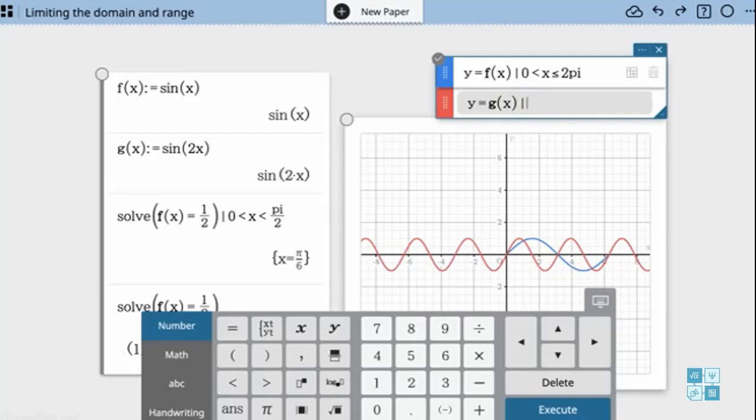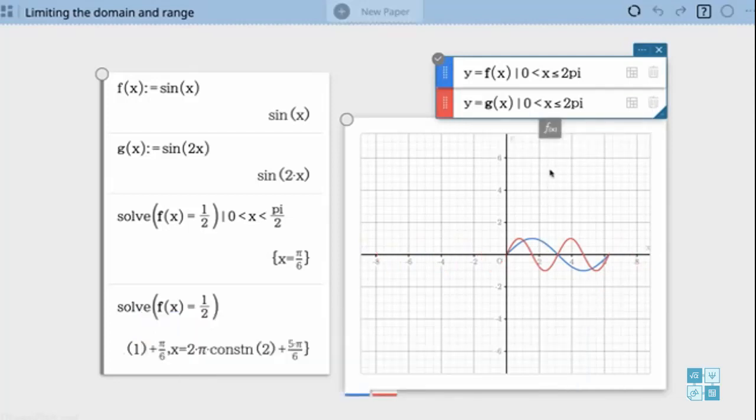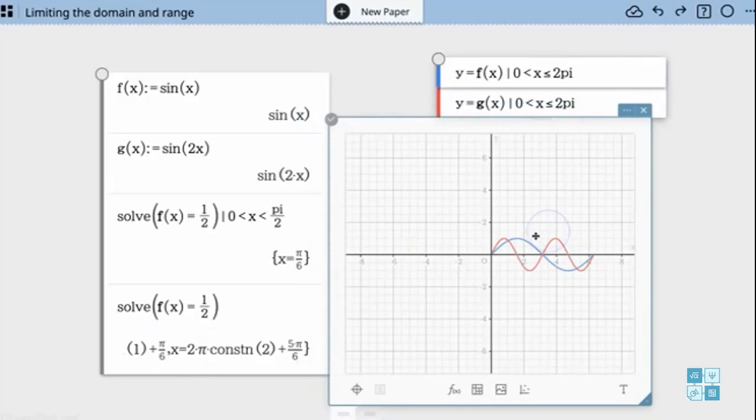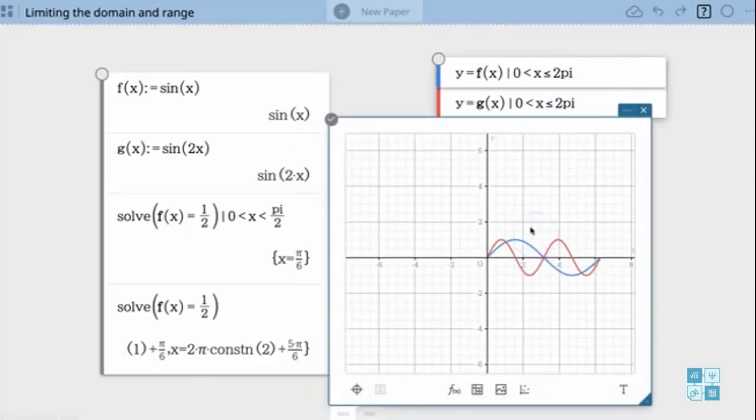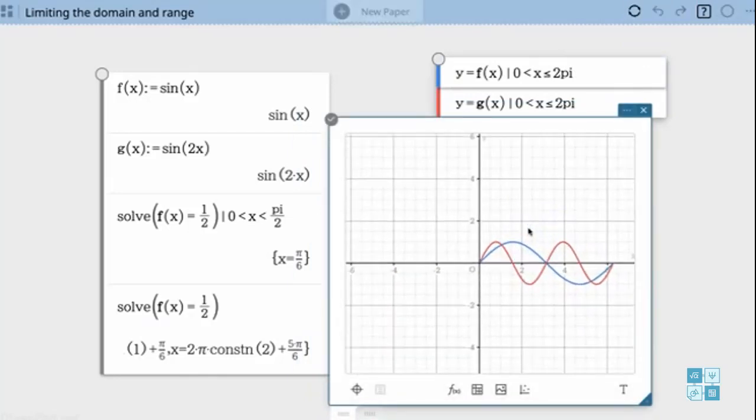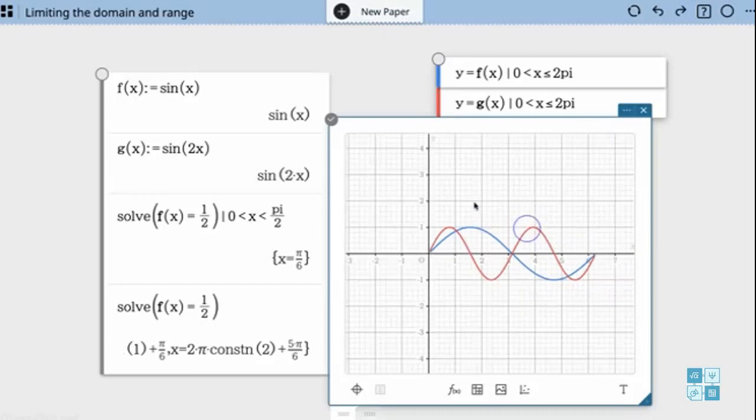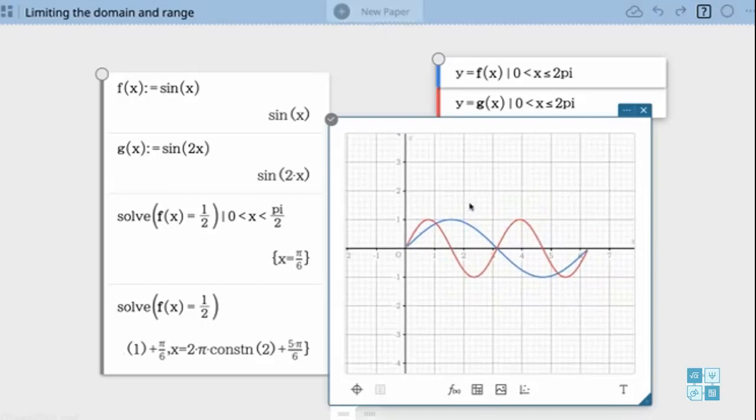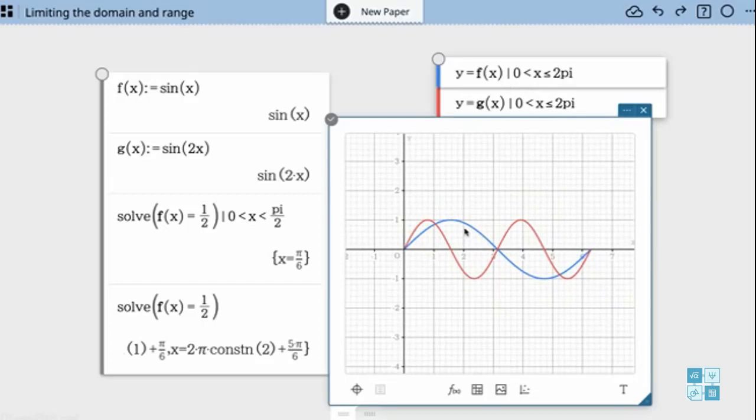So let's do the same thing for the g of x which is sine of 2x. So we're going to limit it between 0 which is less than x which is less than or equal to 2 pi. Now in my function I'm going to zoom in so that I can see the difference between a function that has x and 2x and make some connections between those.